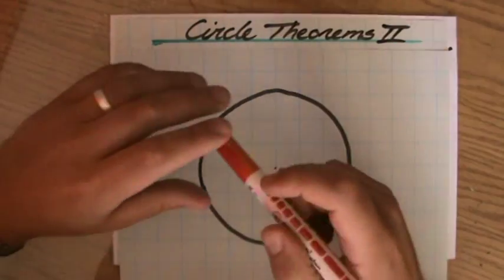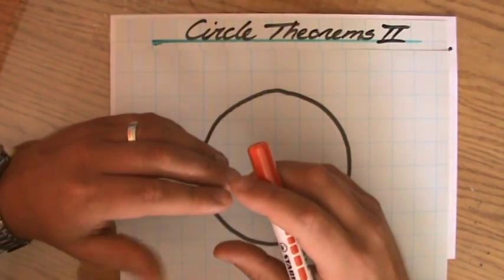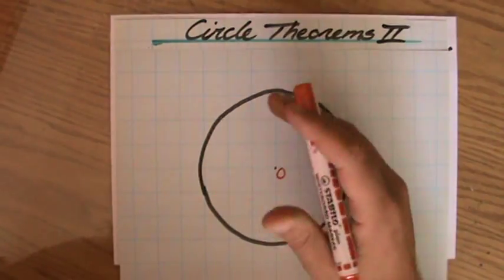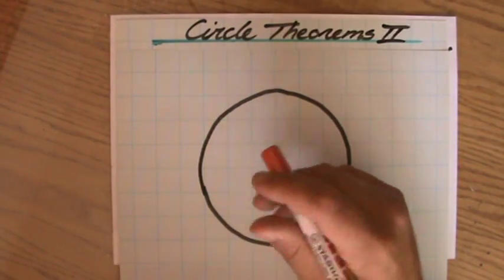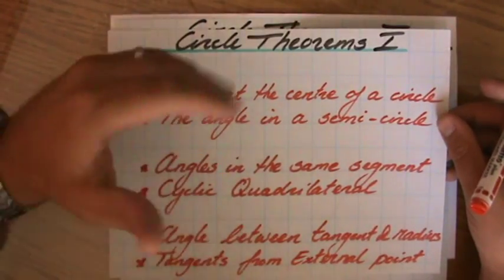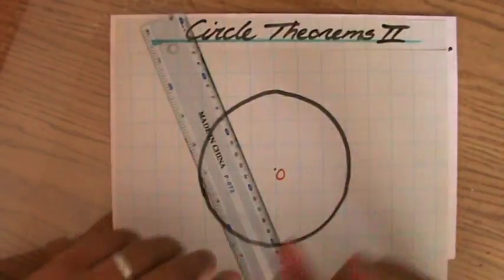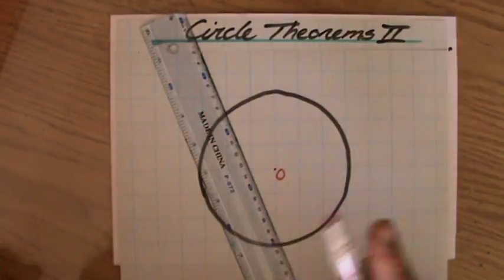So we're going to talk now about the first circle theorem which is angles at the center of a circle. And what I said before in my previous video is that you're really going to distinguish between are the lines going through the center of a circle or not. And this one is through the center of a circle. Now what is going on? What is the circle theorem?